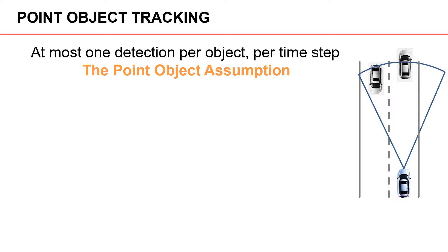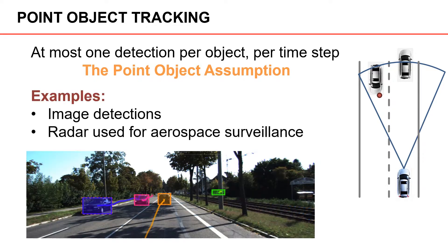In the field of view of the sensor there are two vehicles. In point object tracking we get at most one detection, so here this is illustrated by one of the vehicles being detected and the other not detected. One example of point object tracking is objects detected in images. Another example is aerospace surveillance using radar — in fact, radar used for aerospace surveillance is a historically very common application, and a lot of object tracking literature assumes point object tracking.